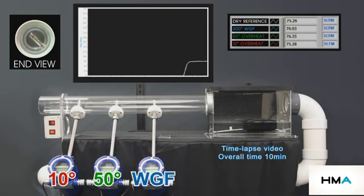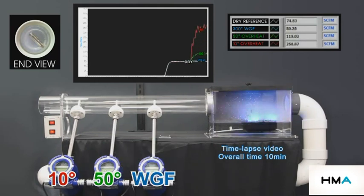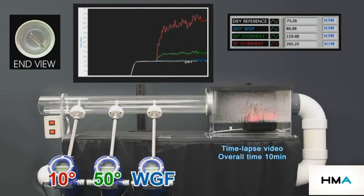At startup when the air flow is dry, all three meters match the dry gas reference meter. Once the fogger is turned on, meter 10 and meter 50 immediately start producing false high readings because the meter electronics interpret the water hitting the sensors as dense gas.